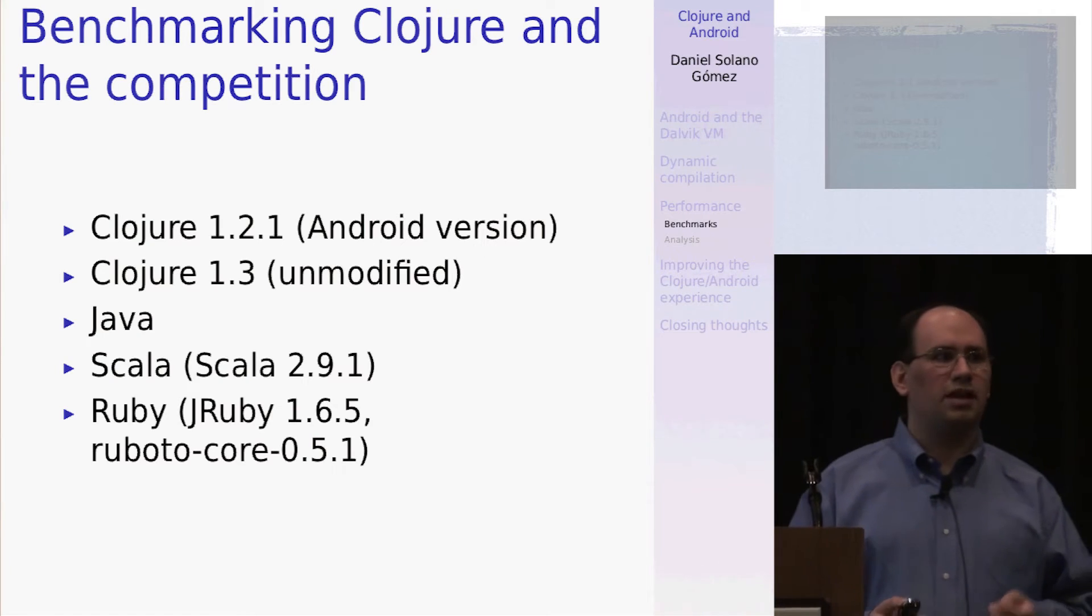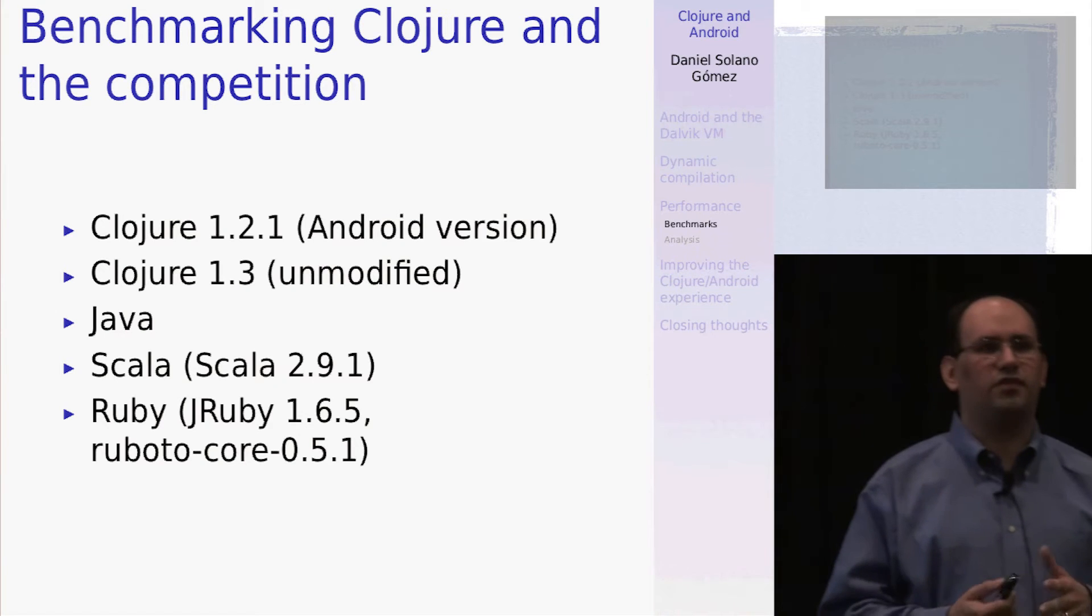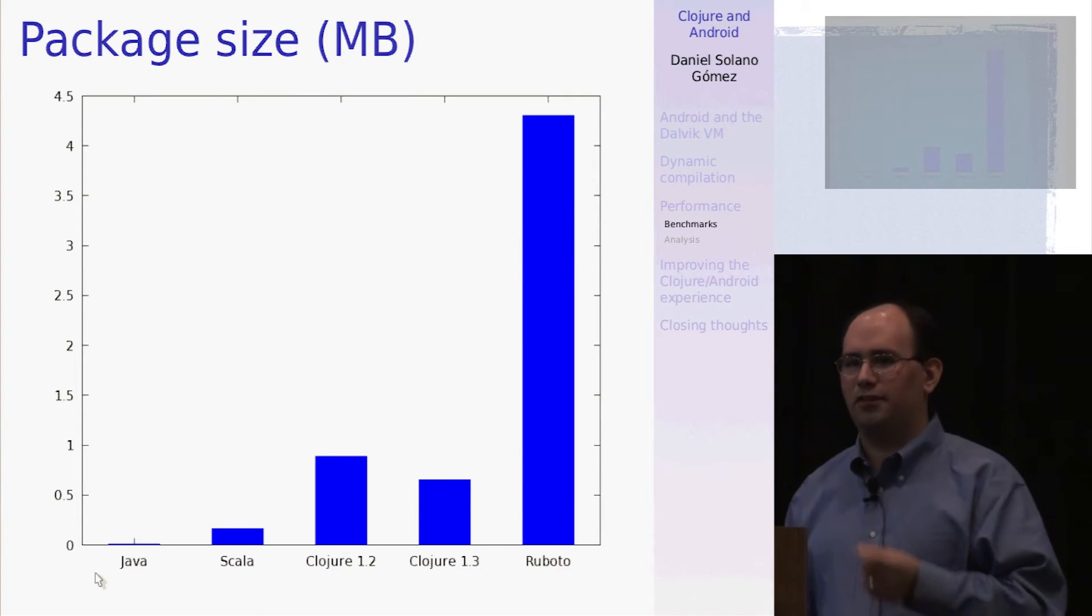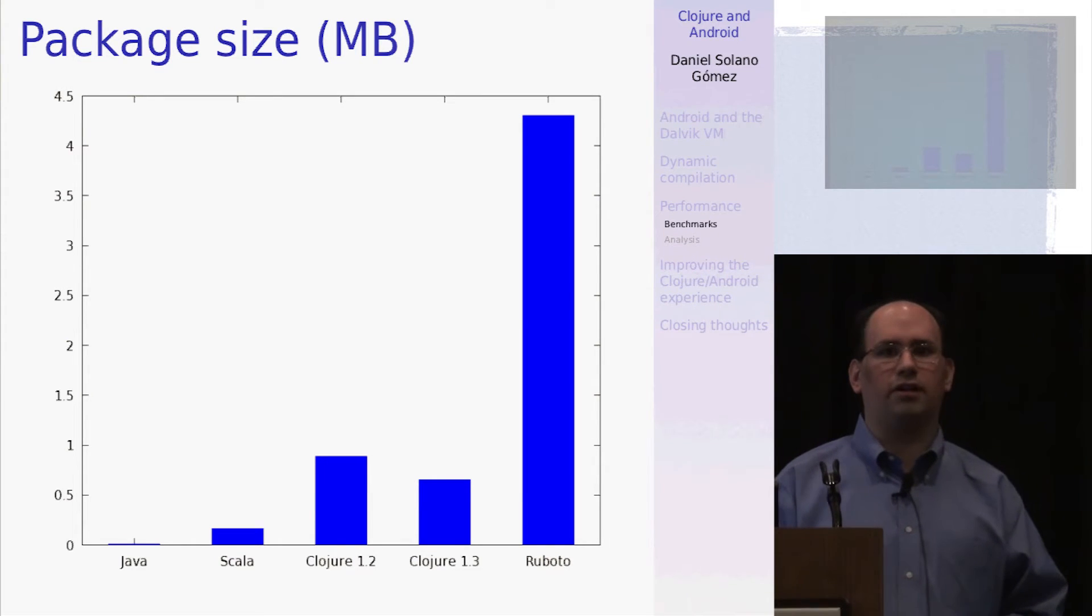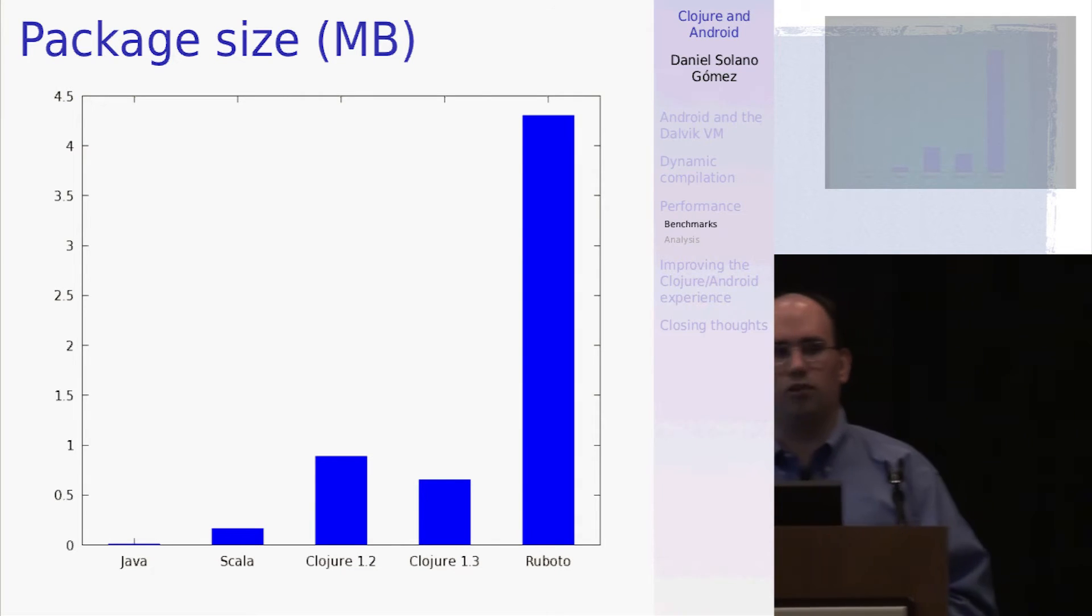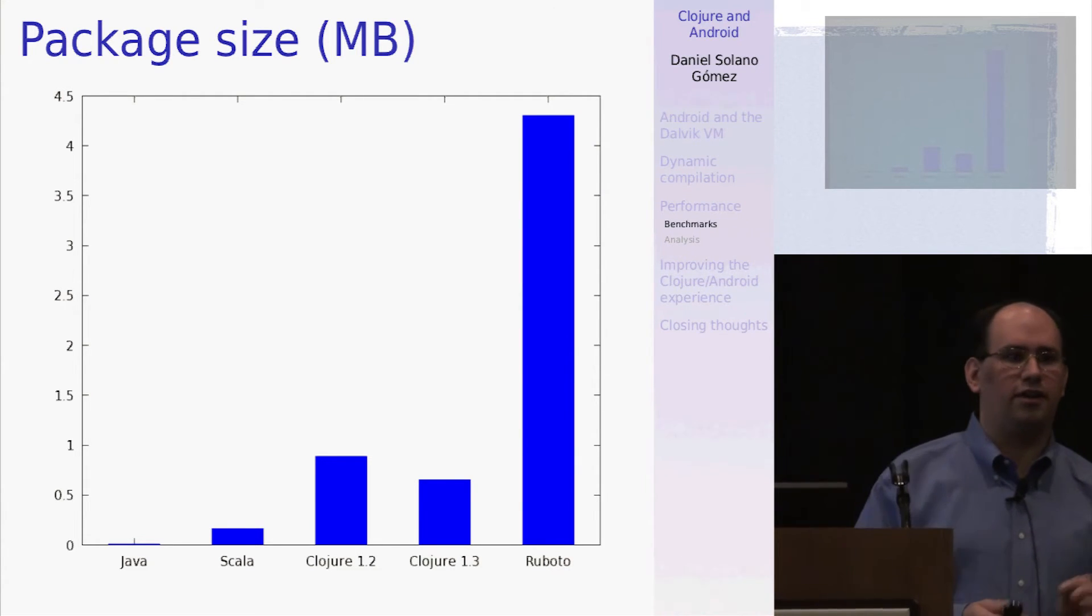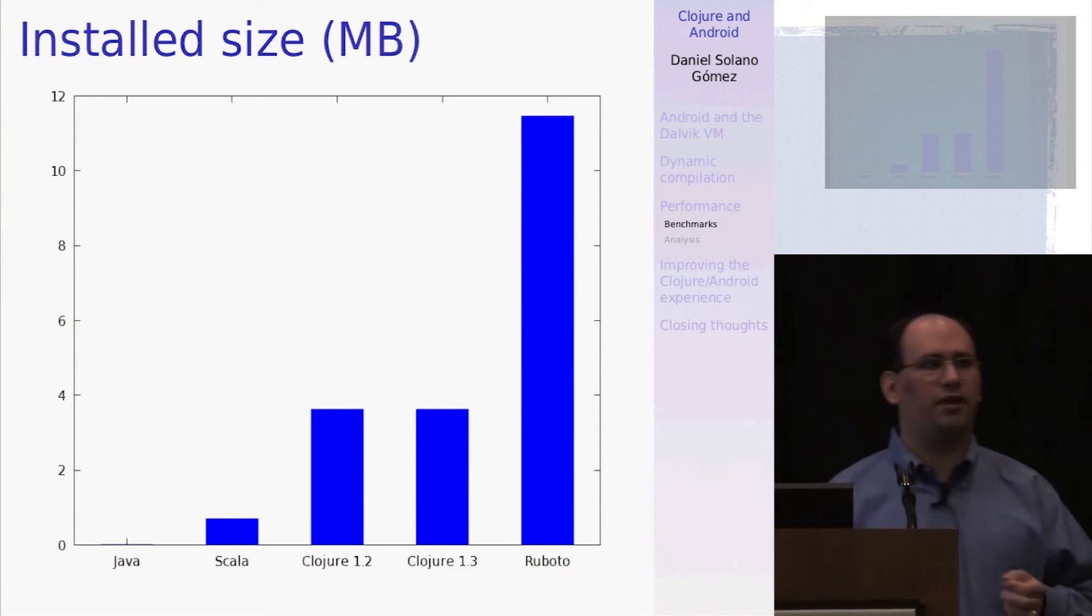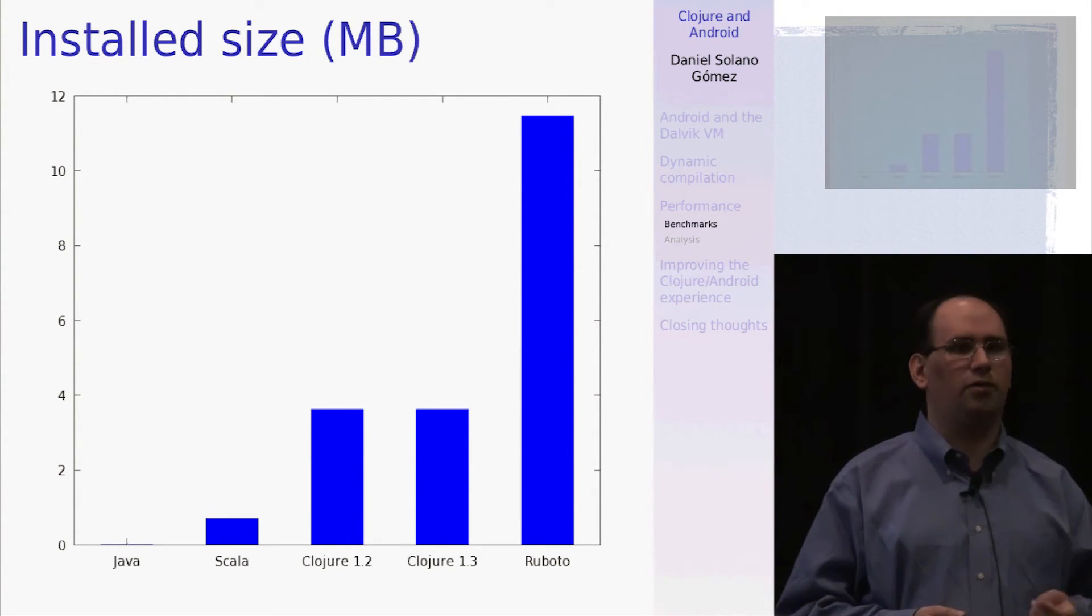So how does it perform? I performed an experiment where I have an absolute minimal Hello World type app and implemented it in several different languages. And I just wanted to see how much overhead does the language create. So the first one that's of interest is package size. Android users are oftentimes downloading your application over expensive or slow internet connections, wireless internet connections. So the idea is that the smaller that you can keep your package, the better it is for your user. Likewise, once it's installed on the machine and gets all expanded, you want to keep it as small as possible because these machines don't have that much in the way of disk space. And usually there's only about a gigabyte or so allocated for applications.